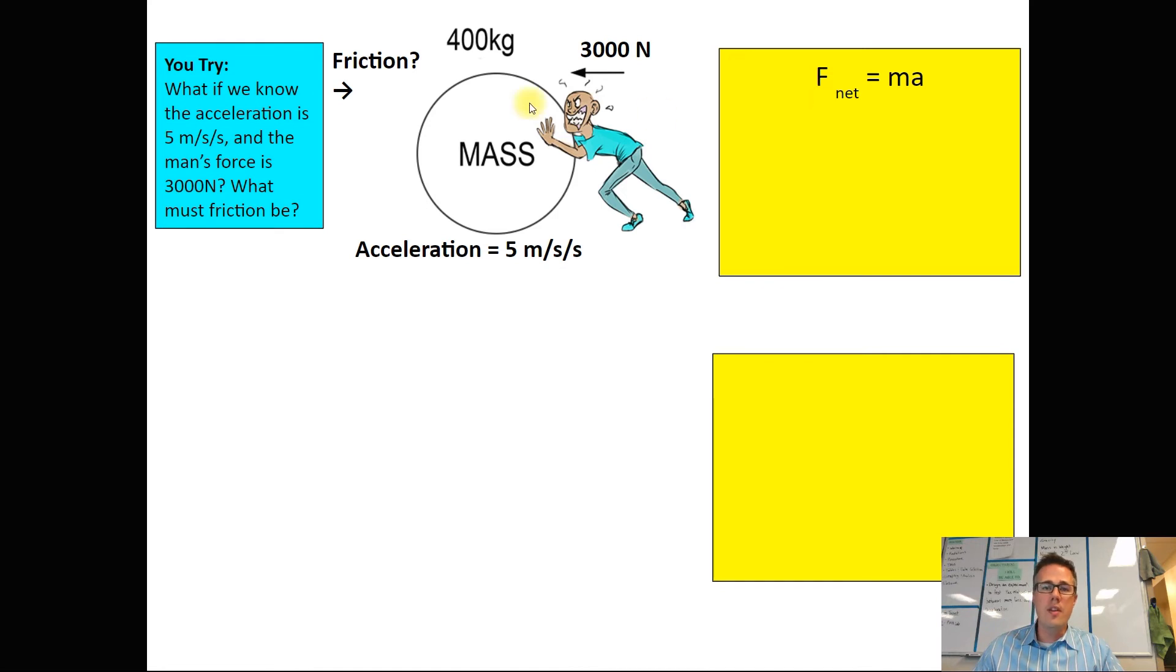Remember, net force is everything that goes one way minus everything that goes the other way. I'm going to take my 3000 minus friction, my variable that I don't know, and then plug in my mass and my acceleration.